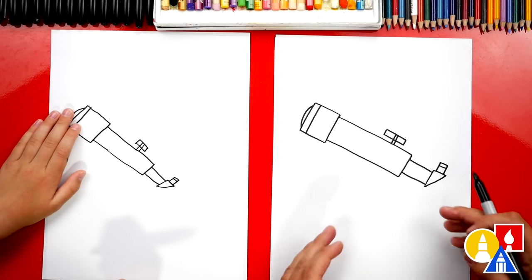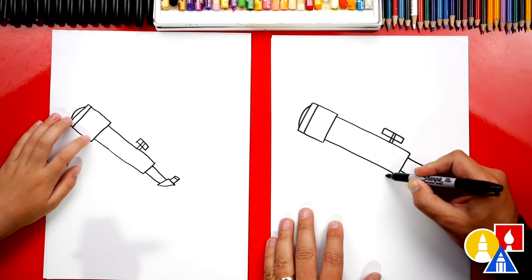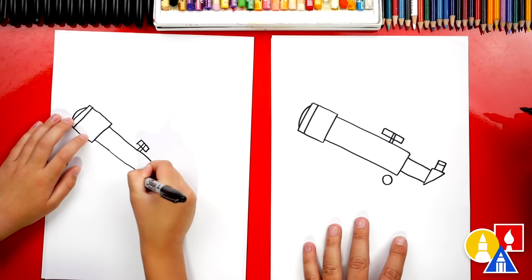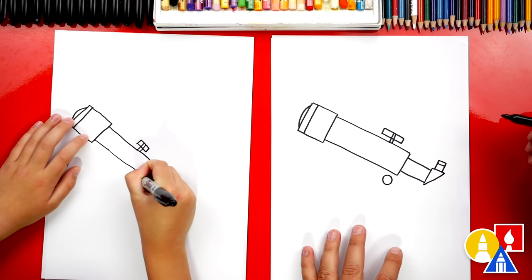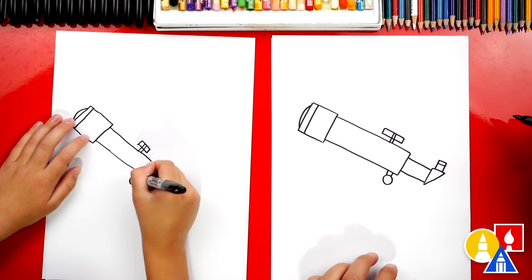Now we can draw the mount and also the tripod. So let's first draw a circle. I'm going to draw close to the end of the tube right here. Then we can draw two lines connecting to the telescope.